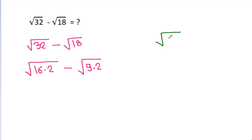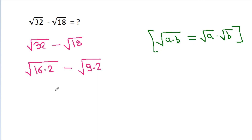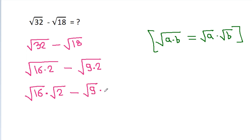And a square root of a times b is equal to a square root of a times a square root of b. So it will be a square root of 16 times a square root of 2, minus a square root of 9 times a square root of 2.